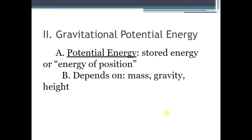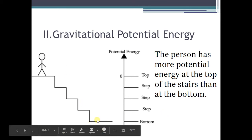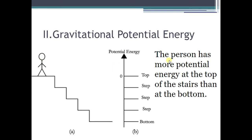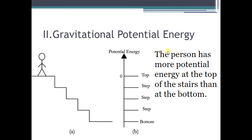Gravitational potential energy depends on mass — how heavy an object is — gravity, which is going to be the same for everything on earth, and the height above the earth that that object is. For example, here we have a person on the top of a staircase. The person has more potential energy at the top of the staircase than at the bottom. The farther an object is away from the surface of the earth, the more gravitational potential energy it has. This scale on the right shows you an increase in potential energy as that person climbs up the steps to the top.